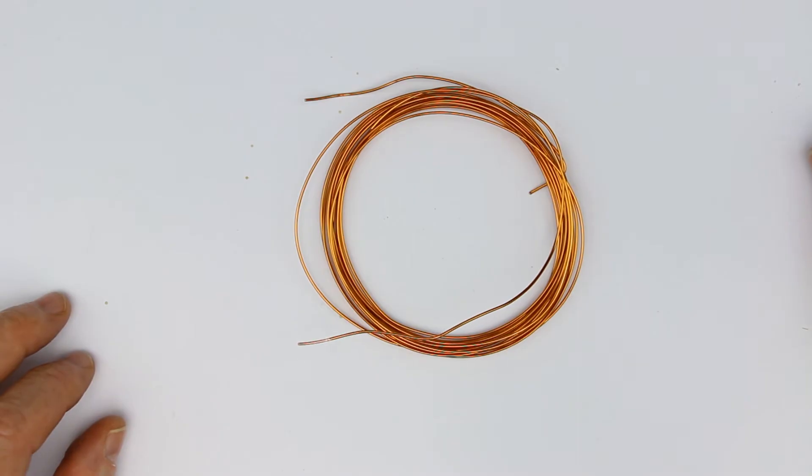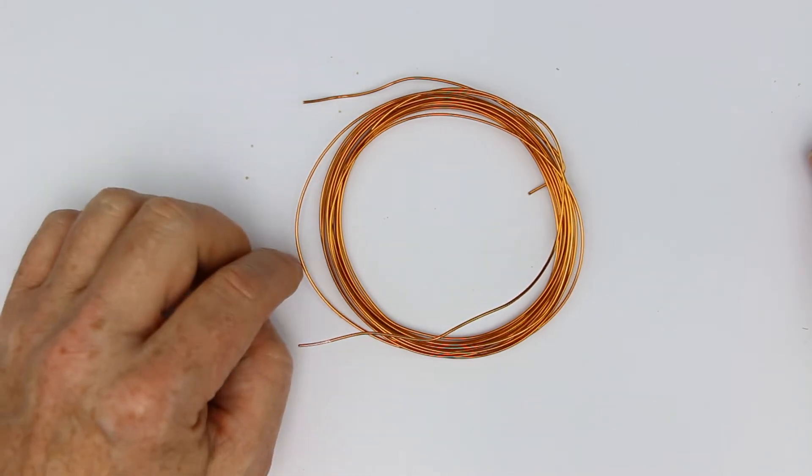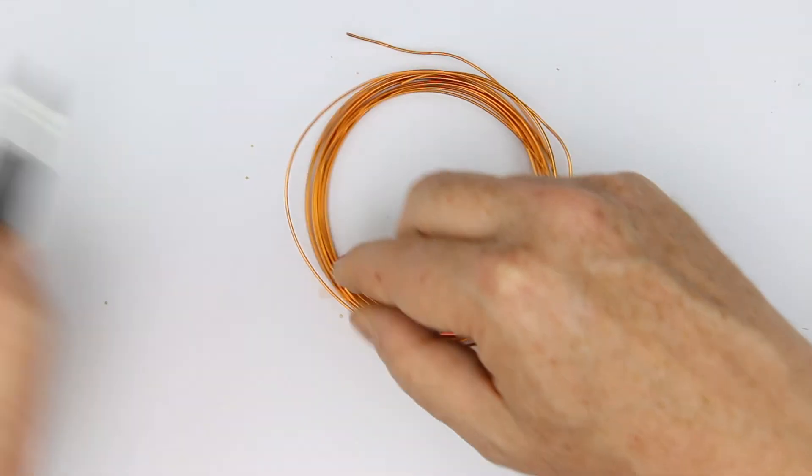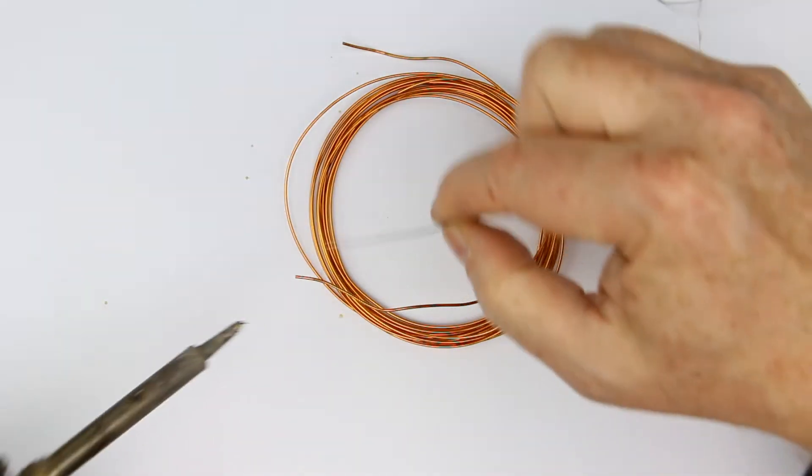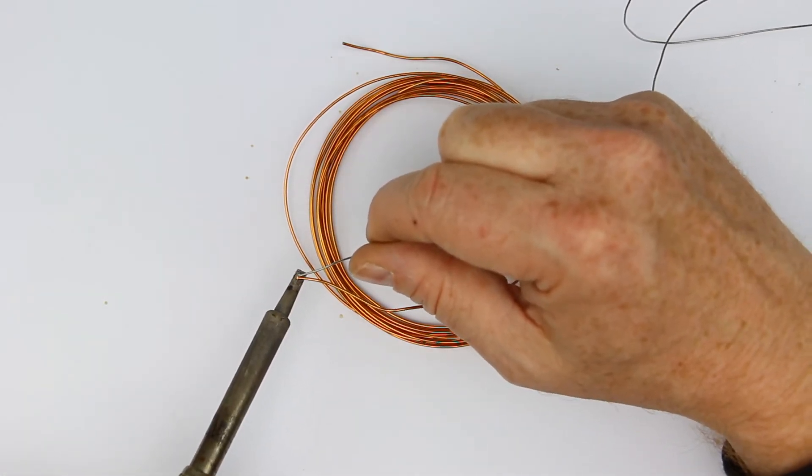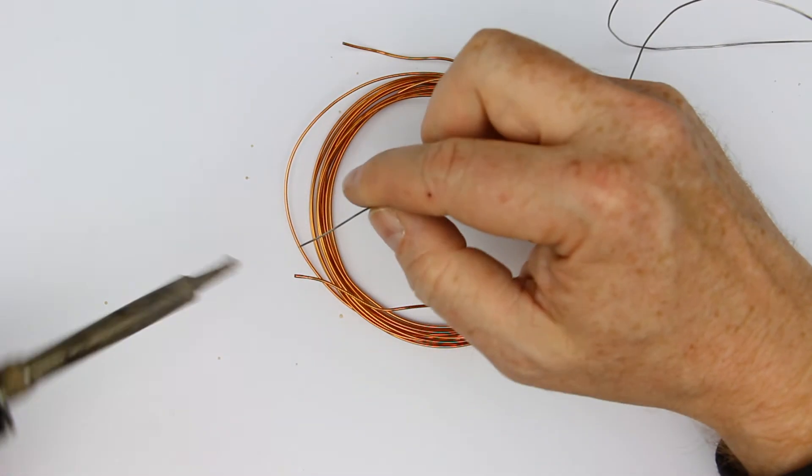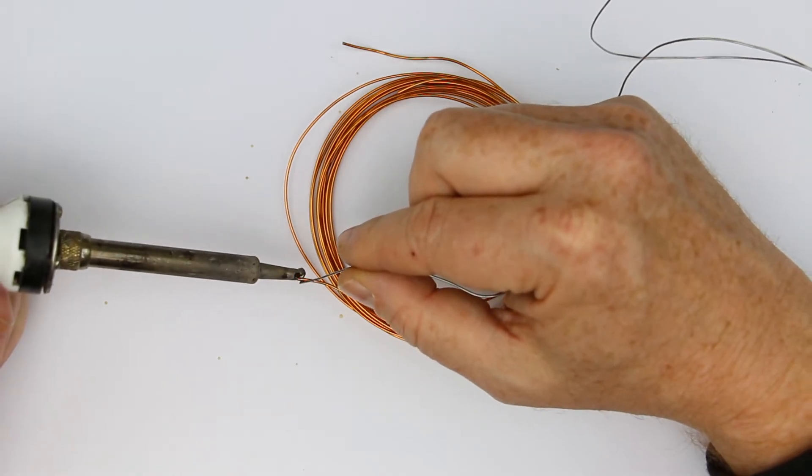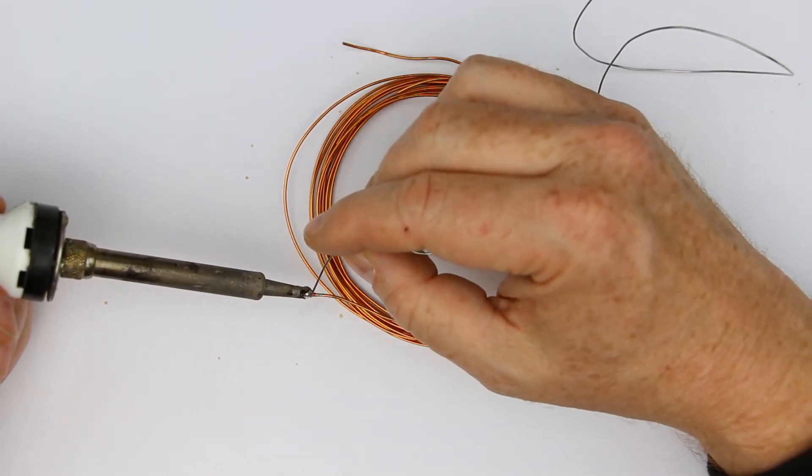But what do you do if you have enameled copper wire of this thickness, which is around a millimeter thick? Then the method with the soldering iron won't work anymore. We can try it and see what we can reach with 400 degrees. You see nearly nothing happens, perhaps if I go up to 450 degrees.